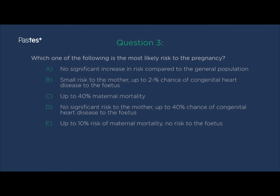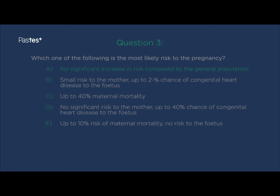We'll now move on to the second part of this question, question three: which of the following is the most likely risk to the pregnancy? If you went for A — no significant increase in risk compared to the general population — you'd be correct.